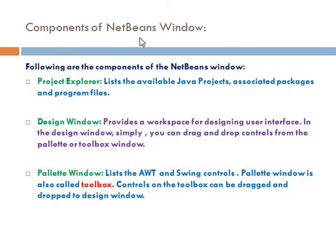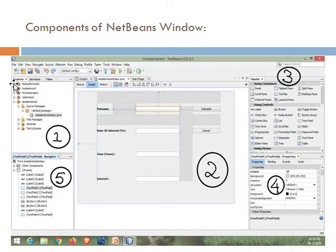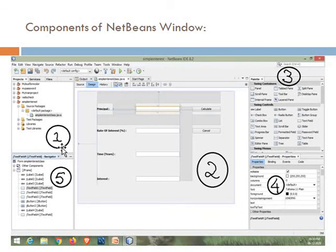Now let's discuss about the components of a NetBeans window. The first component is the project explorer. This component lists the available Java projects, the associated packages and the program files. This is the region of the project explorer that lists all the available Java projects along with their associated packages and program files, and I have indicated this region by number one.